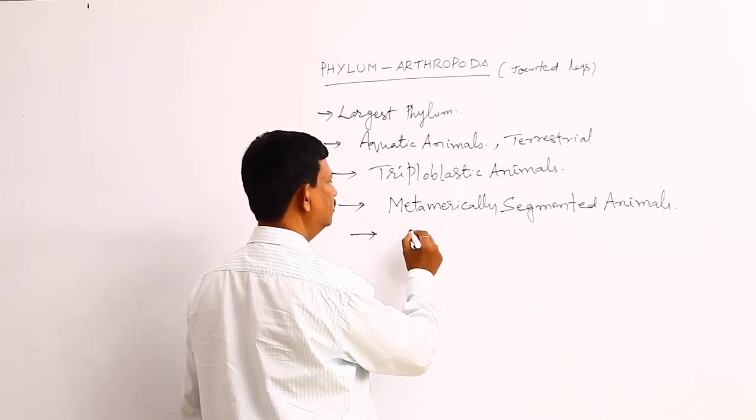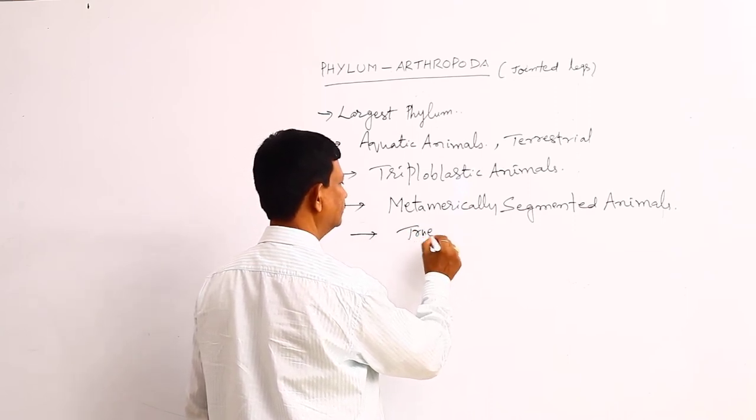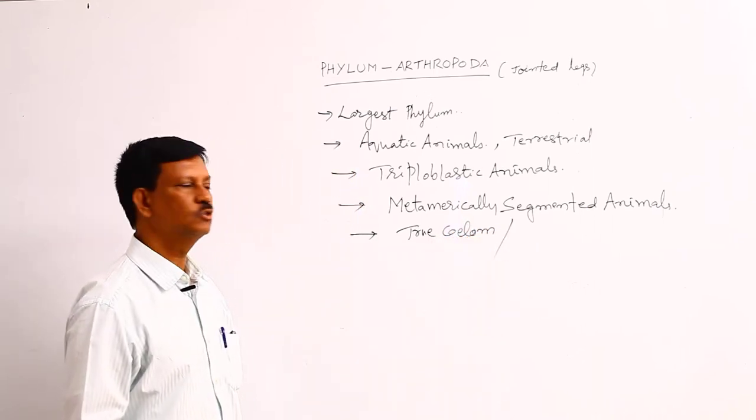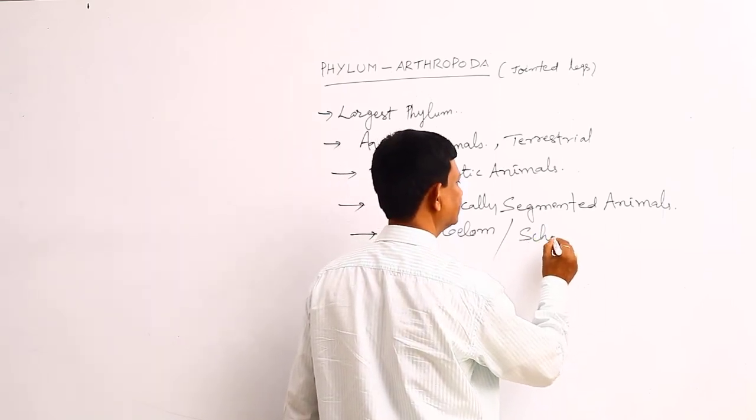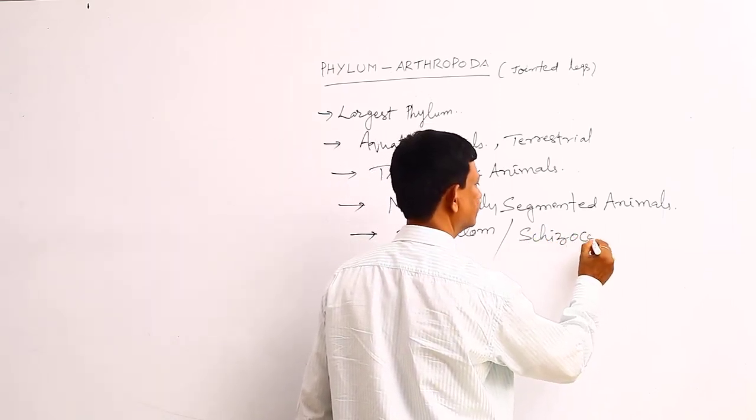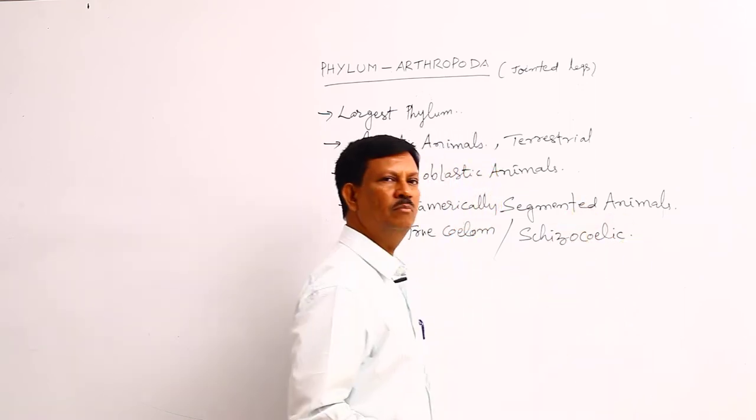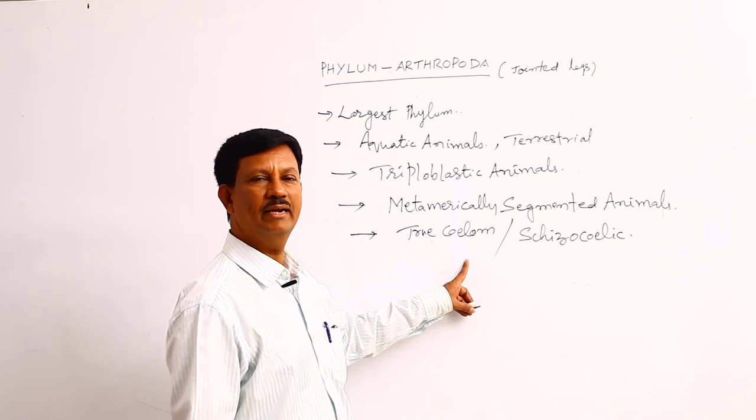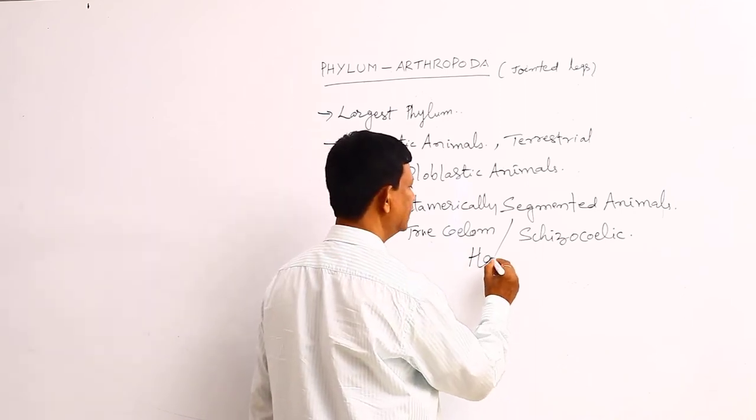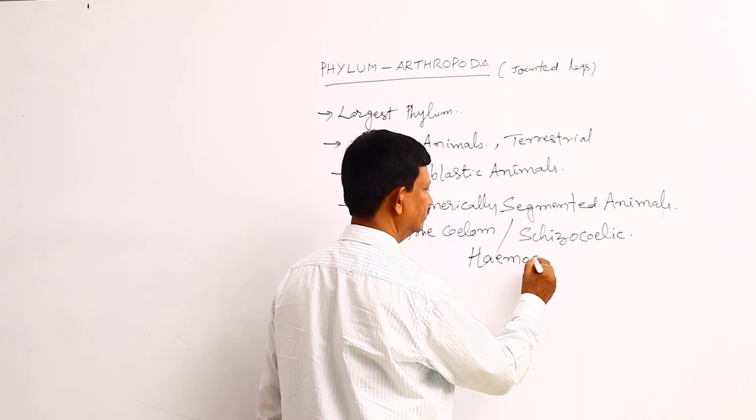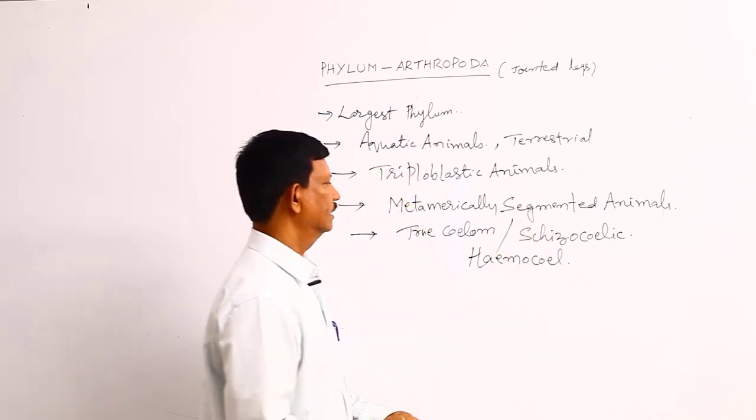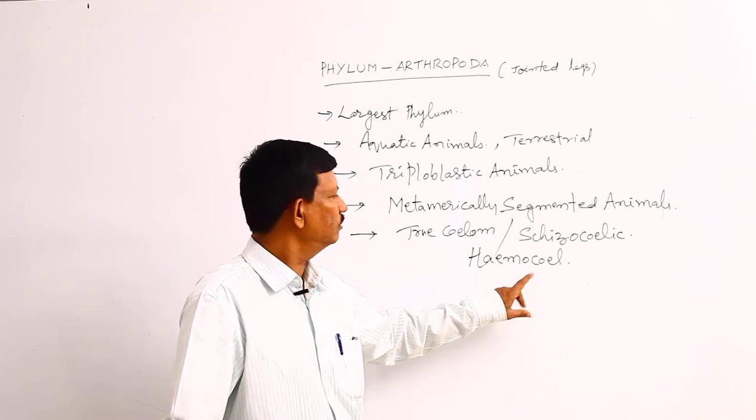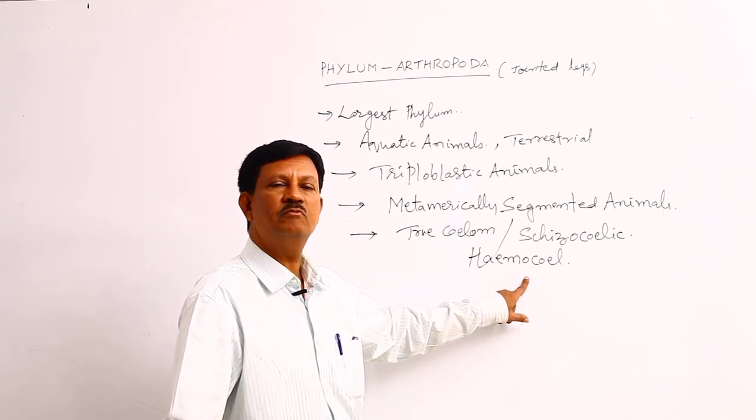True coelom is present in this phylum. Body cavity is known as the schizocelic. Schizocelic body cavity is present and body cavity is filled with blood, hence it is known as the hemocel. Blood vessels do not contain blood; blood is found in the body cavity. Such type of body cavity is known as the hemocel.